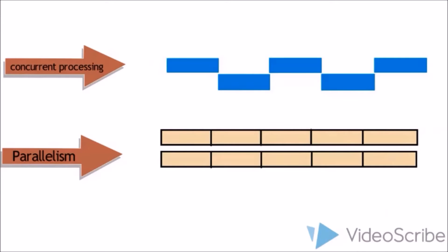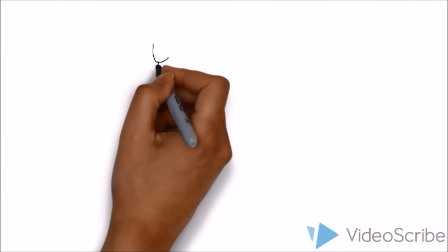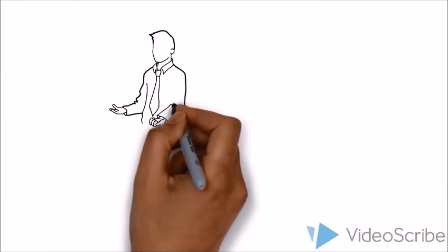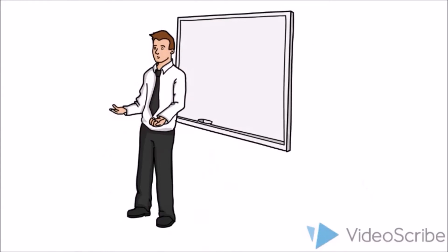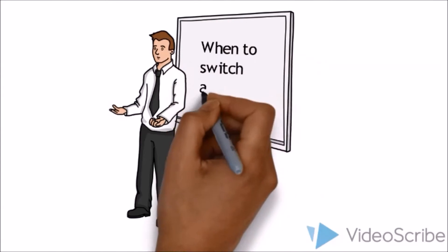So, what is the relation between context switching and concurrent processing? As we know, the concurrent process will run more than one process. To switch from one process to another process, context switching plays an important role to switch the process for the CPU to run. Next, when does the process need to switch?